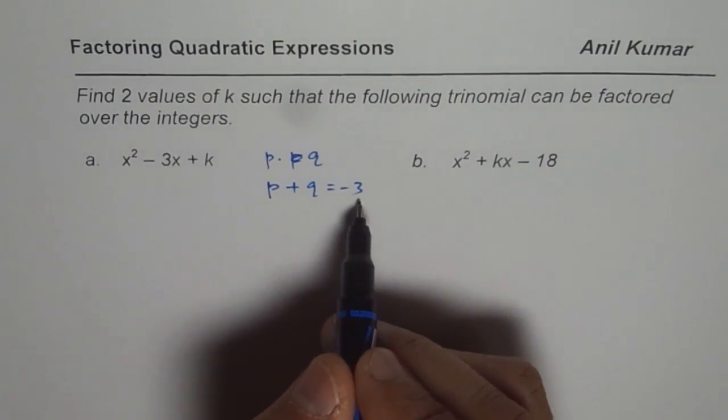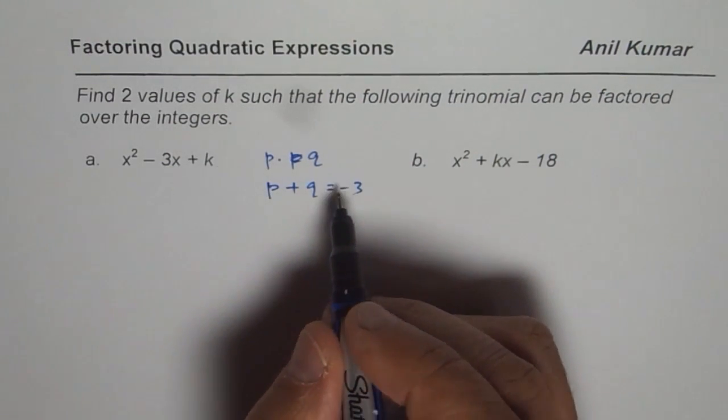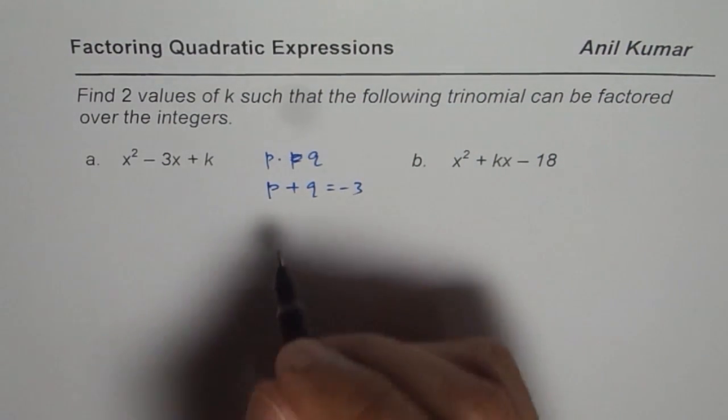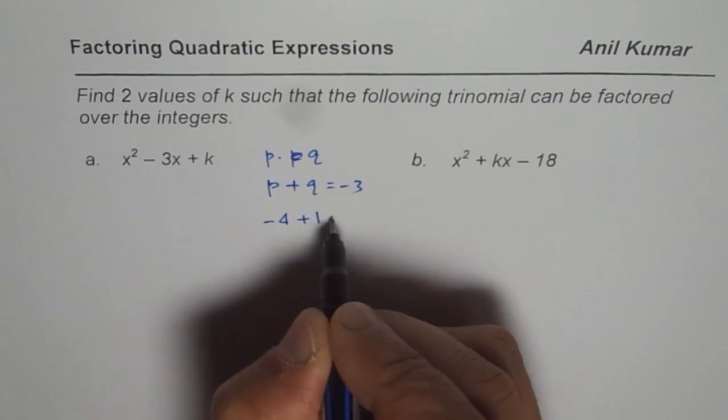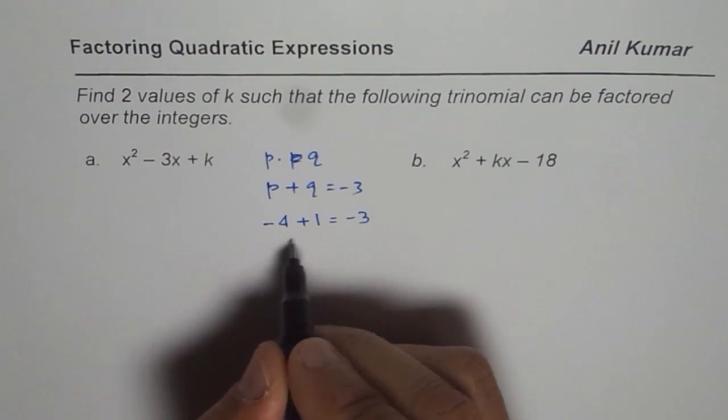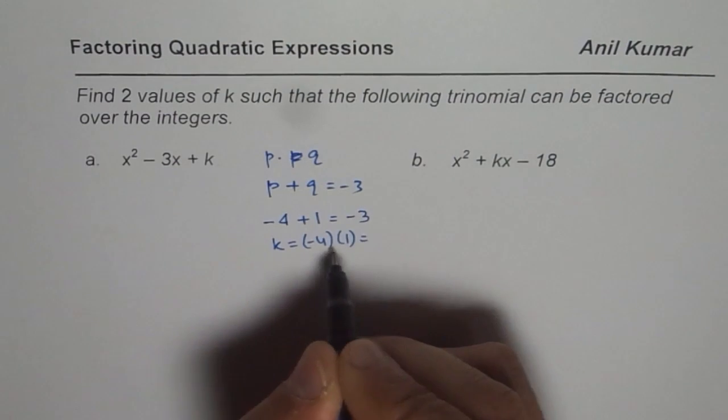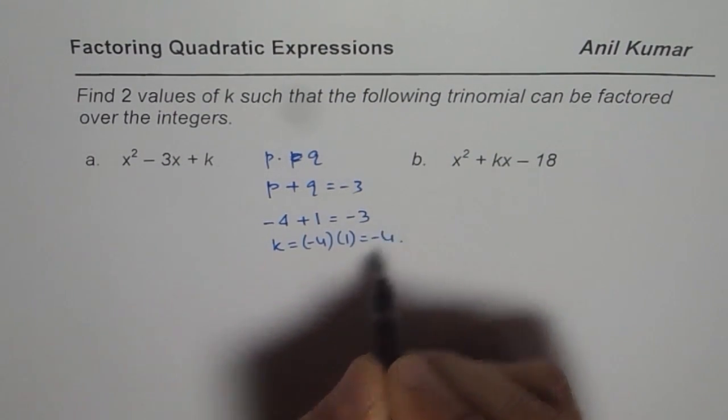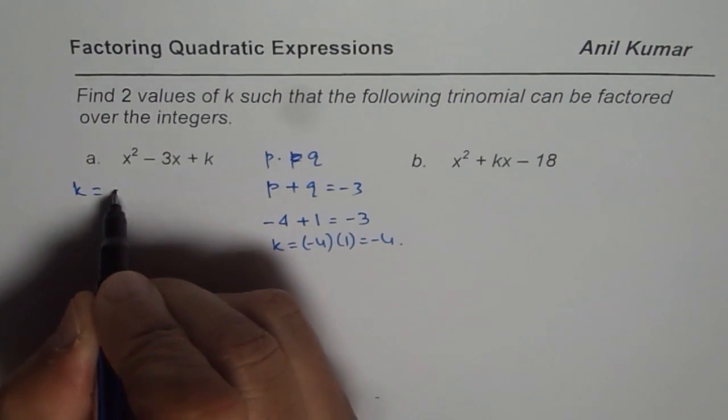Since we are given this sum, what we can do is begin by thinking of two numbers whose sum is minus 3. For example, if I add minus 4 and 1, what do I get? I get minus 3. So k should be equal to minus 4 times 1 which is minus 4. One value of k could be minus 4.